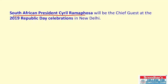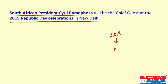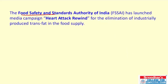South African President Cyril Ramaphosa will be the chief guest of the 2019 Republic Day celebrations in New Delhi. As we know, 2018's Republic Day saw a grand event with all 10 ASEAN heads attending. This time, the guest of honor for the Republic Day celebrations in New Delhi will be South African President Cyril Ramaphosa.